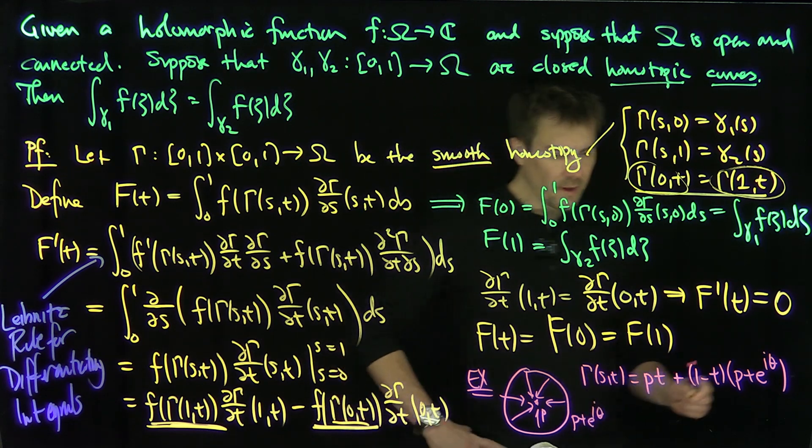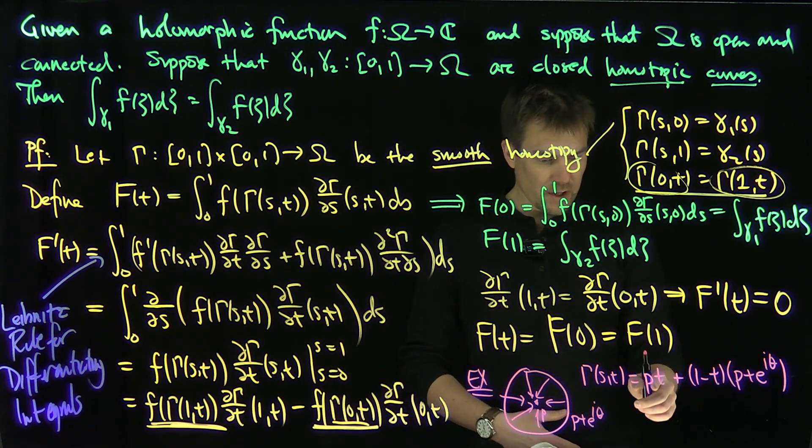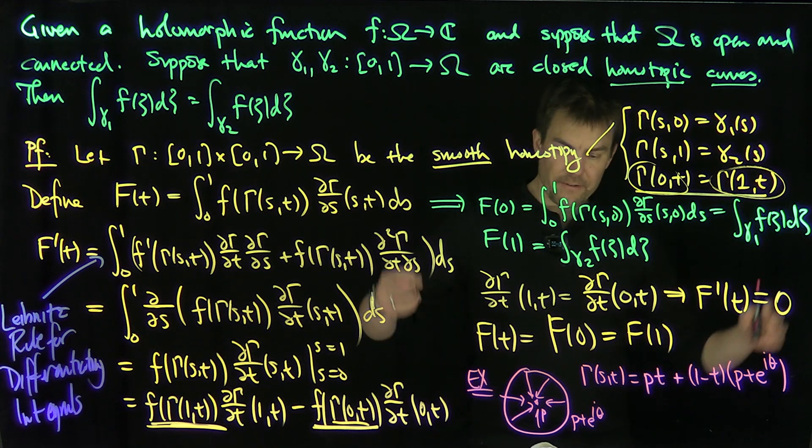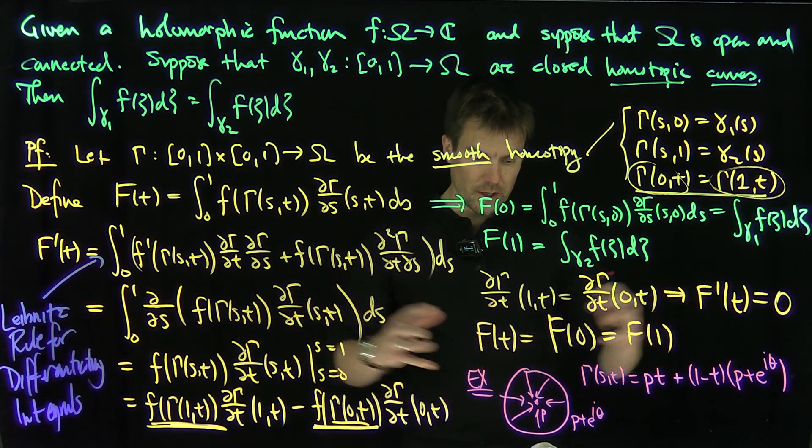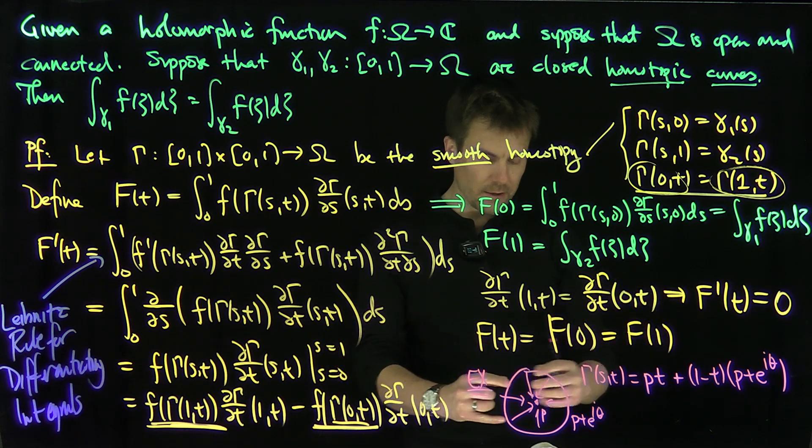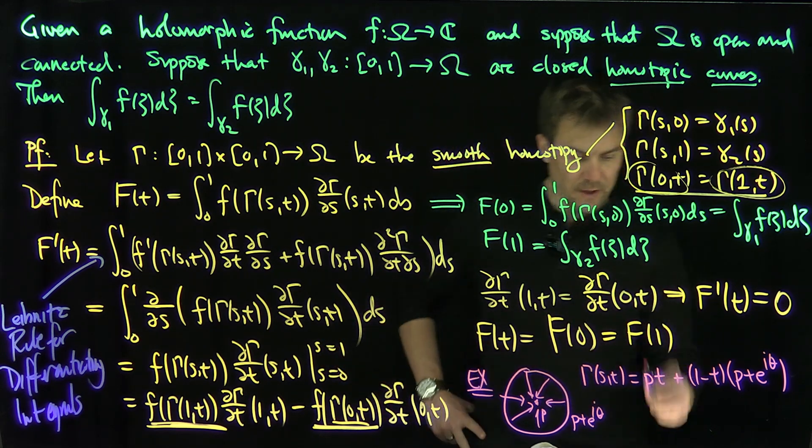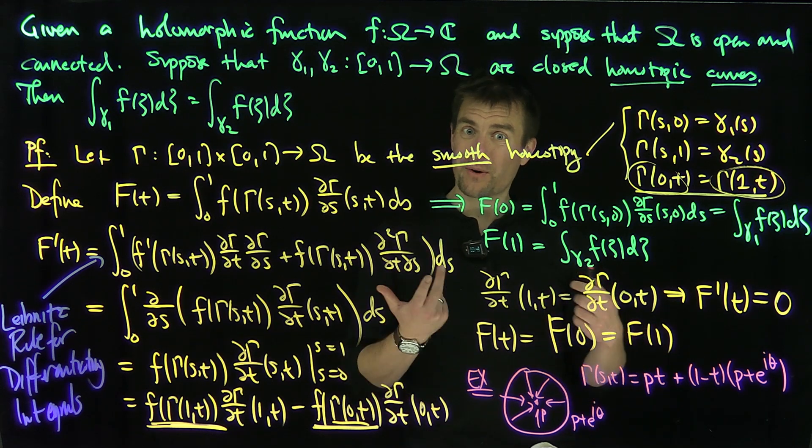And then when T is equal to 1, I just get the point P over here. So in other words, if I can contract this circle to 0, so the circle, of course, is a star-like domain. So I can contract it to any point over here, P. And that says the integral over the circle is the integral over P, but the integral over P is equal to 0.